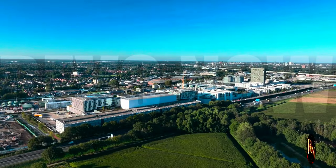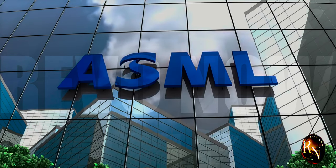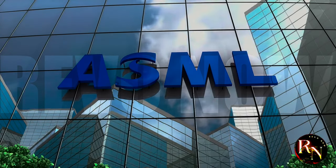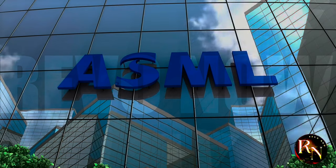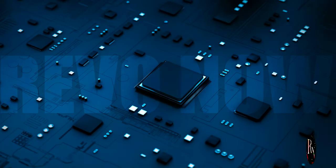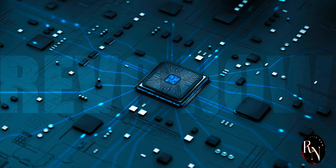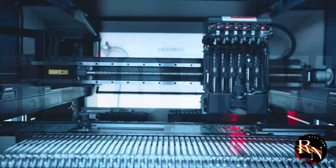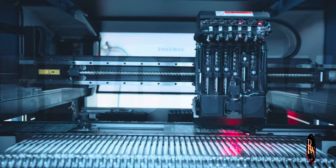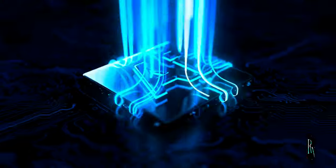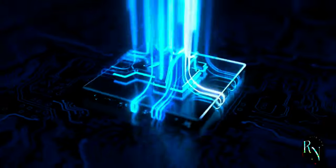This is where ASML comes in. ASML is a leader in the field of lithography, providing the cutting edge technology needed to produce the most advanced chips. They're like the master craftsmen of this microscopic world, holding the secret to creating the most advanced chips. Their machines are capable of etching circuits with incredible precision down to the nanometer scale. These chips power everything from artificial intelligence to self-driving cars. They are the backbone of the technologies that are shaping our future, enabling innovations that were once the stuff of science fiction.